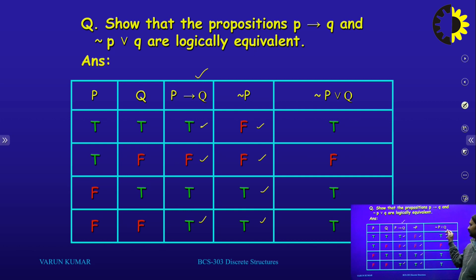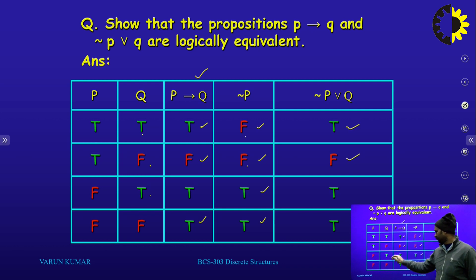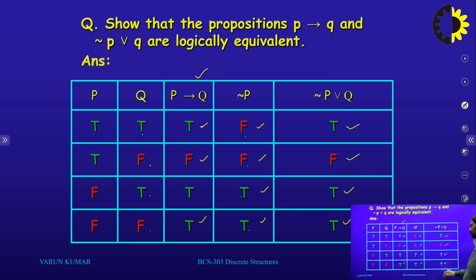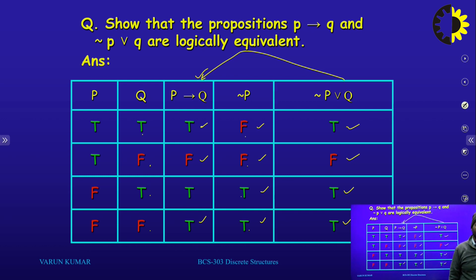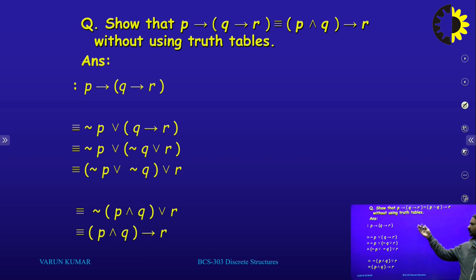Then what is the disjunction with Q? We evaluate negation of P disjunction with Q. We can say that both statements are logically equivalent, so we can solve this type of problem using these formulas.